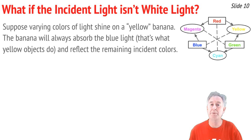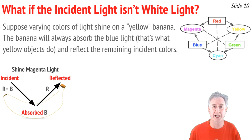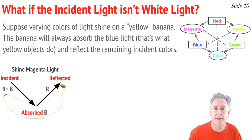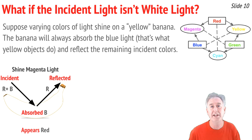So far the incident light has always been white light — RGB. But what if the incident light is not white light? That's when things get interesting. Let's start with a yellow banana and shine magenta light on it. Magenta light is simply red plus blue. Yellow bananas absorb blue light, so the blue gets absorbed and taken away. What doesn't get absorbed is reflected — that's the red light. This banana now looks red.